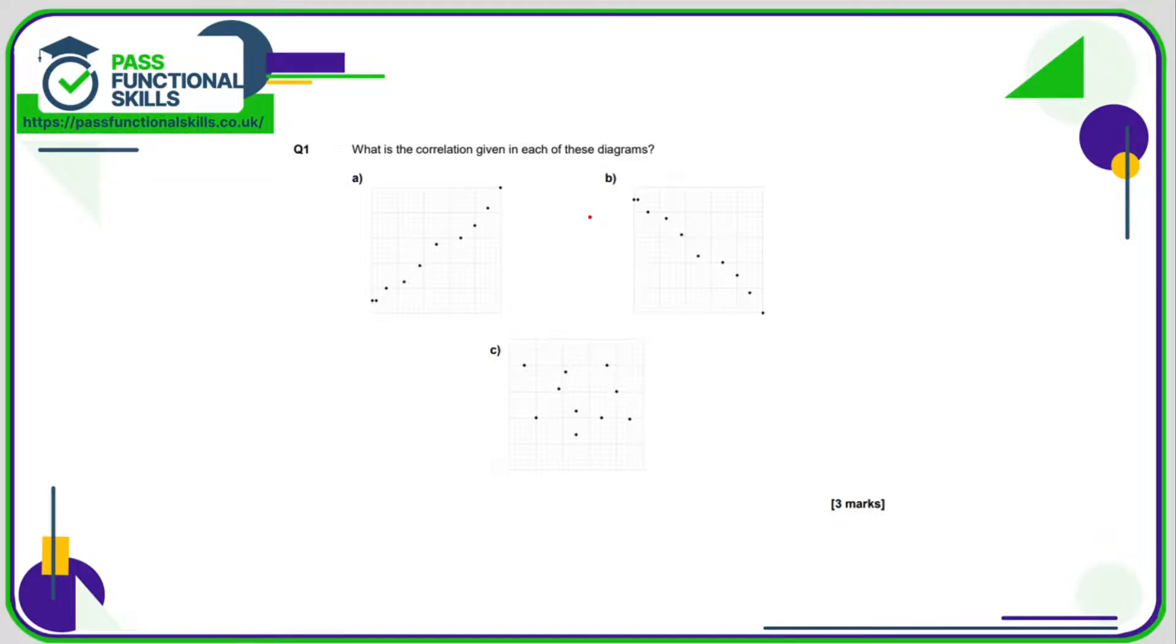Now correlation all depends on whether or not you can draw in a line of best fit and whether that line of best fit is going up or going down and how close the dots are to that line of best fit. If I were to draw a line of best fit here it would be something along the lines of that and as you can see all the dots are very close to the line so there is definitely correlation and the line is going up. This is an example of positive correlation.